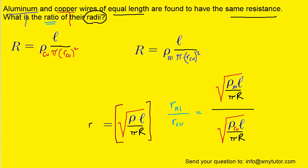Now we should notice that the length term is going to cancel, as well as the pi R terms. We mentioned earlier that they had equal lengths and equal resistances, so those terms will cancel. So in fact we're just left with the square root of aluminum's resistivity divided by the square root of copper's resistivity.